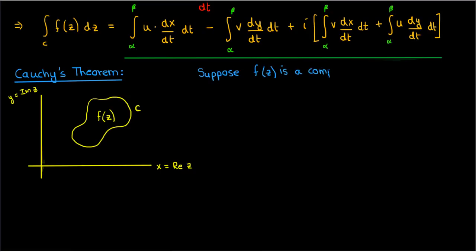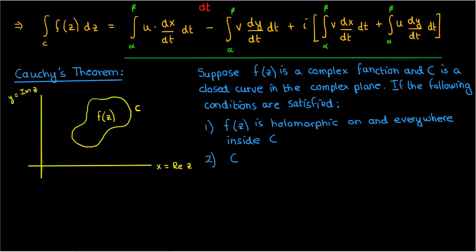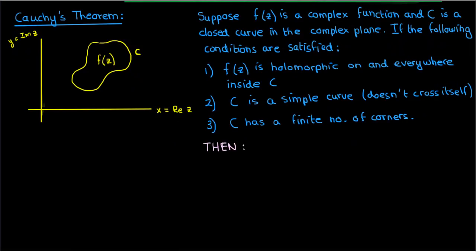Specifically, Cauchy's theorem states that if I have a complex function f(z) and a closed curve c which satisfy the following three conditions. One is that f is holomorphic or differentiable on and everywhere inside c. The second is that c is a simple curve, by which I mean it doesn't cross itself. And the third is that c has a finite number of corners, so a square is fine but something crazy like a Weierstrass function isn't.